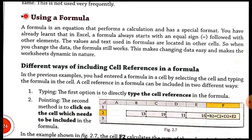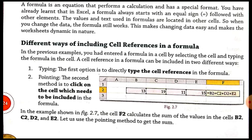Now, different ways of including cell references in a formula. There are two ways of using cell references. The first way is to directly type the cell reference in the formula. The second method is by using the pointing method. Pointing means if you want to include any particular cell in your formula, you don't have to type the cell reference — you just click on the cell which needs to be included. When you click on the cell, its cell reference is automatically included in the formula.